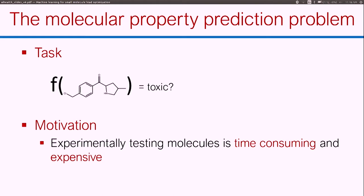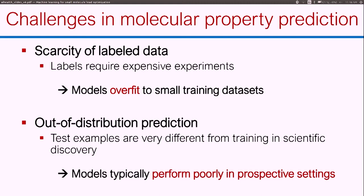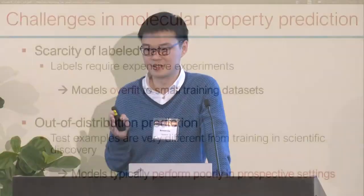There are challenges in this problem. One is that we just don't have a lot of labeled data, because you need expensive experiments to get these labels. As a result, a lot of these machine learning and deep learning models tend to overfit to these very small training sets. The other issue is how we use these models — we want to use them for scientific discovery, making predictions on examples we may have never seen before. There's usually a mismatch between test-time examples and the examples your models were trained on, and we see that a lot of these models tend to perform very poorly in these prospective settings.